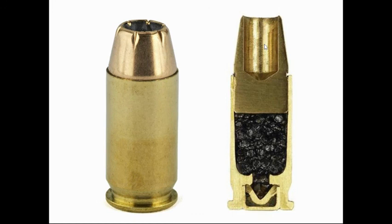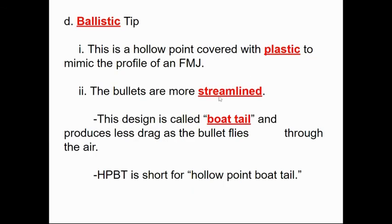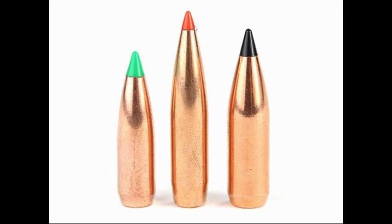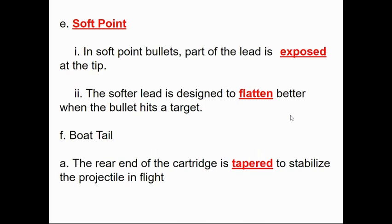A ballistic tip is basically a hollow point but covered with a plastic tip to make it aerodynamically more like a full metal jacket. The full metal jacket is very streamlined because it's fully enclosed. By covering the hollow opening with a plastic tip, we streamline the round — that's what the ballistic tip is for. This basic design is sometimes called a boat tail. If you imagine looking down on it like a rowboat, the back end tapers — that's the boat tail — providing stability during flight.